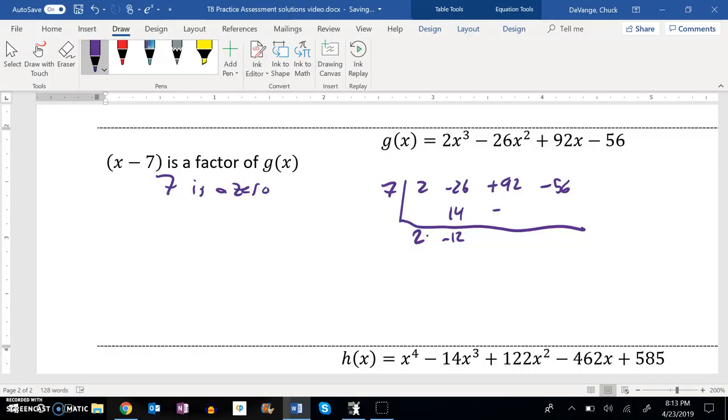So 7 times negative 12 is negative 84. Add that to 92, I get 8. 8 times 7 is 56. Great. So I factored out an x minus 7, and I was left with a 2x squared minus 12x plus 8.